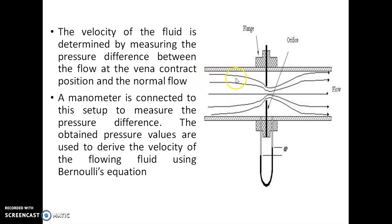When the fluid enters the orifice plate, its cross-section is reduced and further reduces. At a particular place, that cross-section is minimum, away from the plate. At this place the cross-section will be minimum, and it is called as vena contracta. After that, the fluid flow diverges.